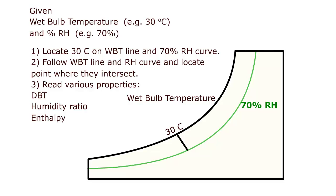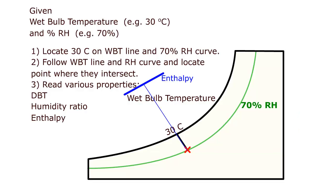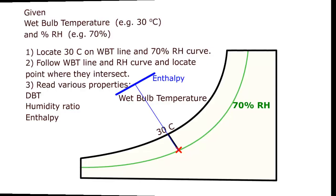Let's consider another example where the wet bulb temperature and percent relative humidity are given. Here, the wet bulb temperature is 30 degrees C and relative humidity is 70 percent. We follow the 30 degrees C wet bulb line and see where it meets the 70 percent relative humidity curve. From that point, we read the dry bulb temperature from the vertical line, the humidity ratio from the horizontal line, and the enthalpy from the constant enthalpy line.